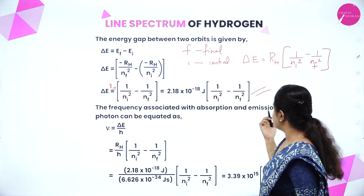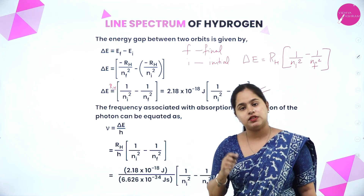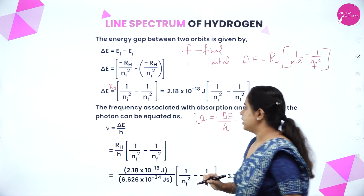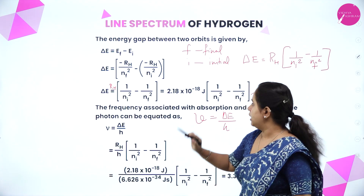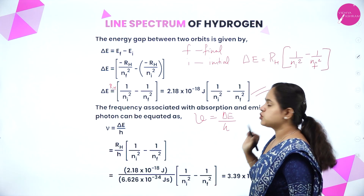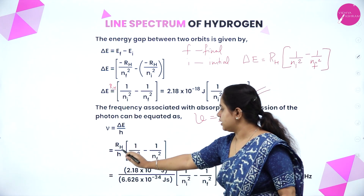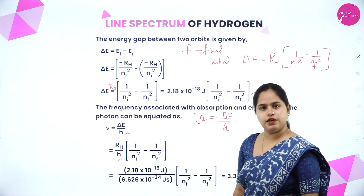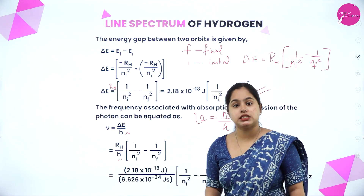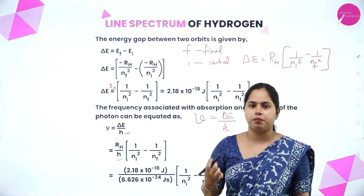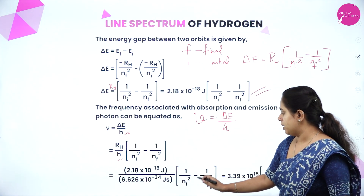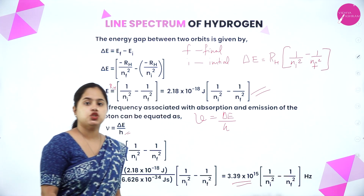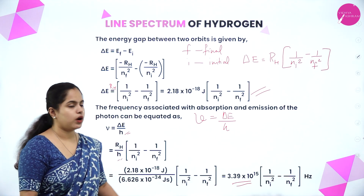The frequency associated with absorption and emission of a photon can be calculated as ν = ΔE/h. Substituting the delta E value and using Planck's constant h = 6.626 × 10⁻³⁴, we get ν = (RH/h) × (1/NI² − 1/NF²), which gives ν = 3.39 × 10¹⁵ × (1/NI² − 1/NF²) per second.